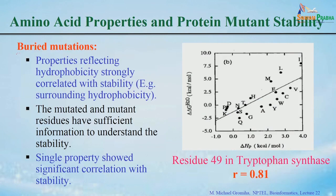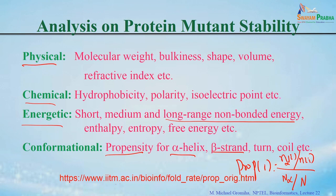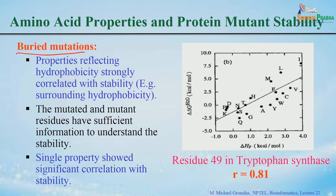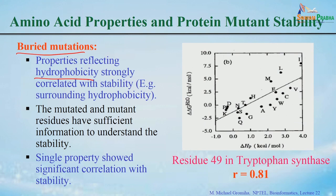For buried mutations — mutations in the core of the protein where solvent accessibility is less than 5% — common residues are leucine, alanine, valine, and other hydrophobic residues. Of the 49 properties, when relating to stability for buried mutations, those reflecting hydrophobicity have good correlation. Here I show an example: x-axis is difference in hydrophobicity and y-axis is the free energy change, and you can see good correlation between hydrophobicity and stability.